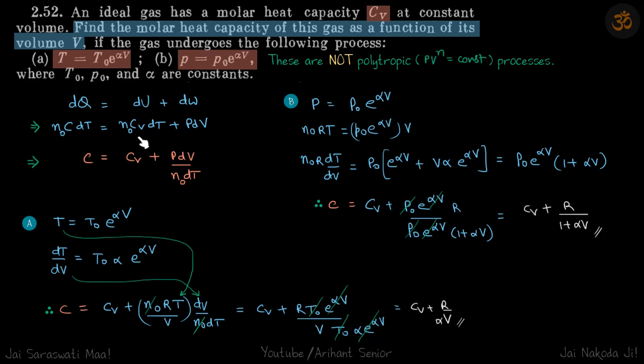Or n₀C dT is equal to n₀Cv dT plus P dV. So we just take n₀dT on the other side and we get C is equal to Cv plus P dV by n₀dT.